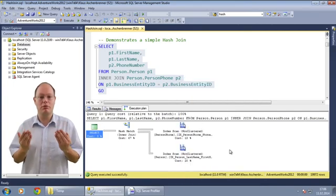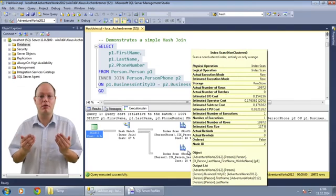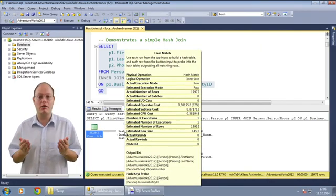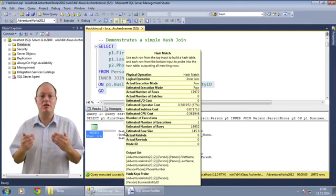You can also see on which columns the probing was done by looking at the tooltip window and the property hash keys probe.